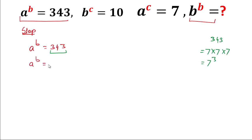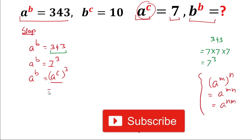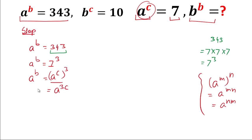We now have a^b = 7³. Since a^c = 7, we substitute a^c in place of 7, giving us a^b = (a^c)³. Applying the power rule — a^m raised to n equals a^(mn) — we get a^b = a^(3c). Since the base is the same, the exponents must be equal, so b = 3c.